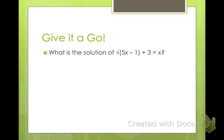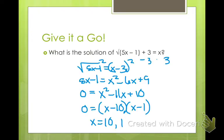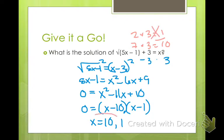Go ahead and try this one. When you solve it you should get 10 and 1 as your answers. When you plug in 10: 10 times 5 is 50; 50 minus 1 is 49; square root of 49 is 7; so 7 plus 3 equals 10 — that one works. But if you plug in 1: 1 times 5 is 5; 5 minus 1 is 4; square root of 4 is 2; and 2 plus 3 does not equal 1, so 1 is not a solution. That means 10 is our only solution.